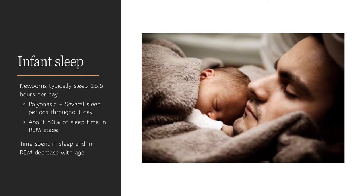Sleep needs vary by age. Newborns sleep much of the time but in very short segments. As babies grow, total sleep slowly decreases but nighttime sleep increases. Newborns typically sleep about eight to nine hours in the daytime and eight hours at night, but may not sleep more than one to two hours at a time. Most babies don't sleep through the night — about six to eight hours continuously — until around three months of age or until they weigh about 12 to 13 pounds, and about two-thirds do so regularly by six months.